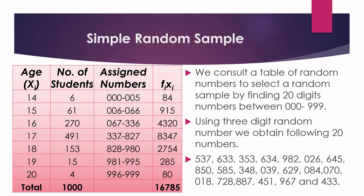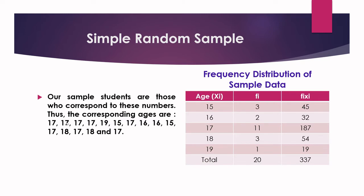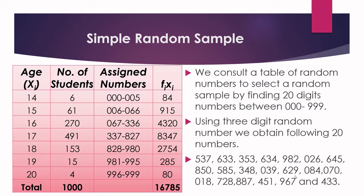Next, we check where each selected number lies in our assigned groups. 537 lies in group age 17; 633 also lies in age 17; 353 also lies in age 17; 634 is also in age 17; 982 is in age 19; 026 is in age 15. You write all these numbers and identify which age group they fall into. So our sample ages come out as: 17, 17, 17, 19, 15, and so on. We have now selected 20 samples using simple random sampling with a random number table.